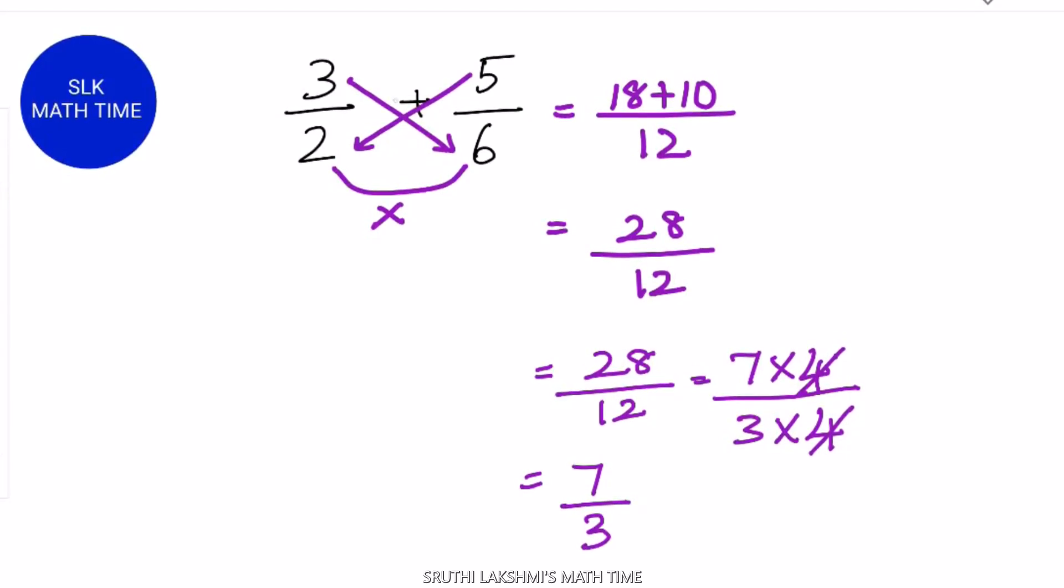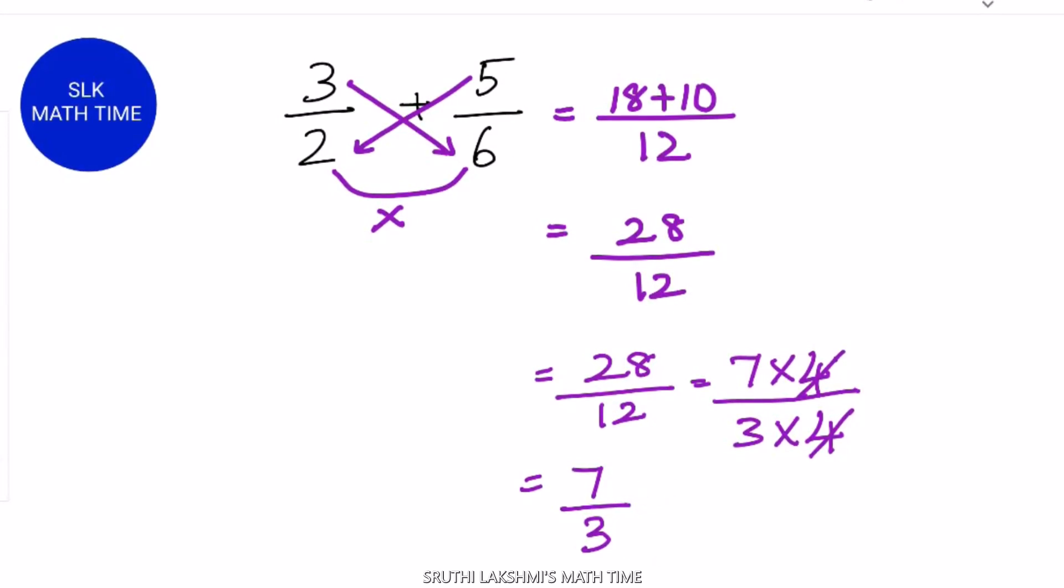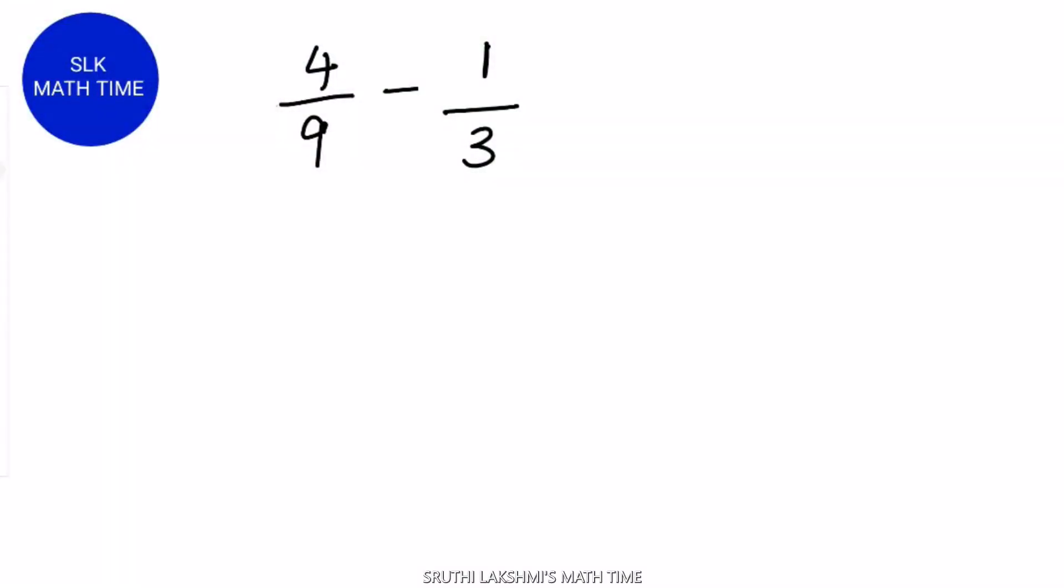So 3 by 2 plus 5 by 6 is 7 by 3. Isn't this method so easy? Now, let's see how to subtract fractions using the butterfly method.